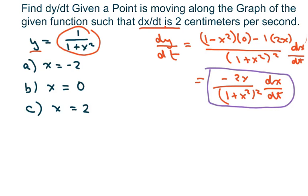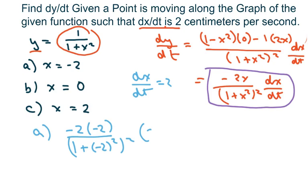So for a, I'm going to plug in negative 2 times negative 2 over 1 plus negative 2 squared squared times my derivative of x with respect to t equals 2, so this is all times 2, and that should give you 8 over 25 centimeters per second.